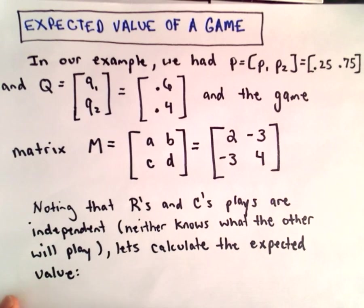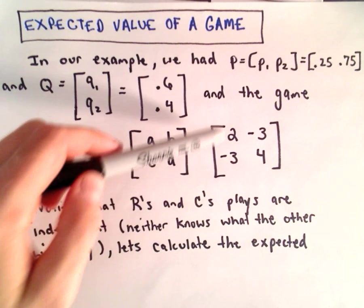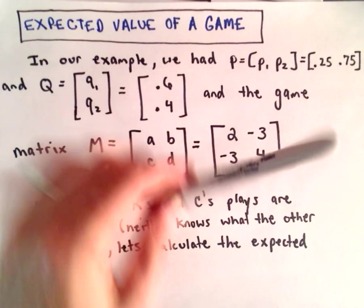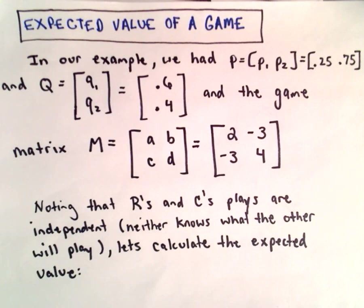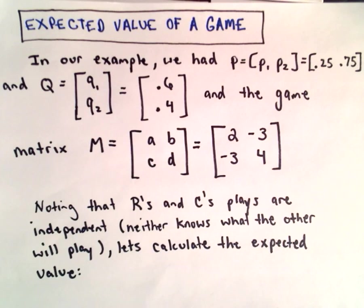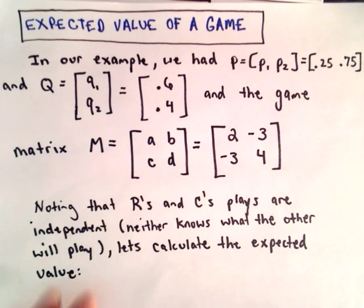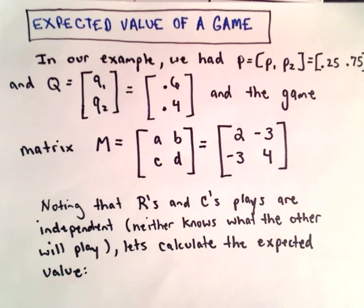So we want to calculate the expected value of this game. At this point, if you could either choose to be the row player or the column player, do you think it matters? These probabilities do affect things, so maybe that's not quite a fair question. But suppose you could pick any probabilities that you wanted to. Would you have any preference? Maybe that's a better question.